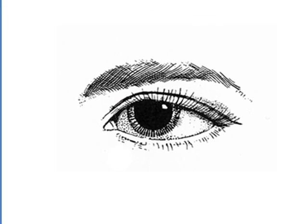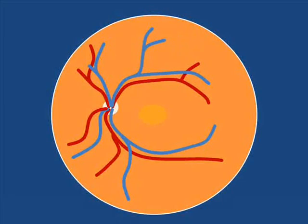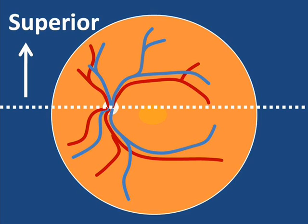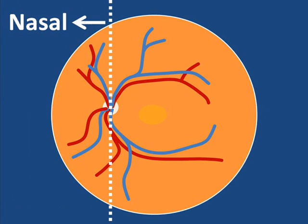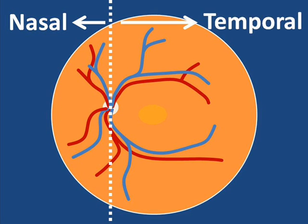This is an illustration of the back wall of the eye, showing the major retinal vessels. The arteries are shown in red and the veins are shown in blue, emanating from the optic disc. When describing the major vessels of the retina, superior is used to describe the upper vessels, inferior is used to describe the lower vessels. The term nasal describes the vessels closer to the nose, and temporal describes the vessels closer to the temple.